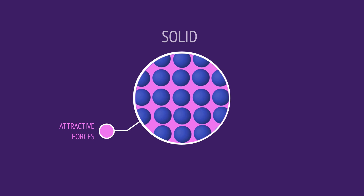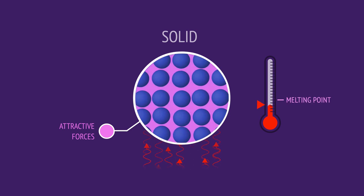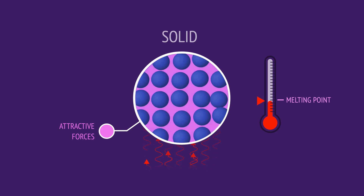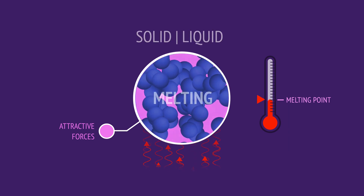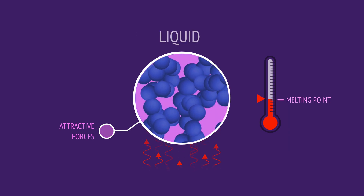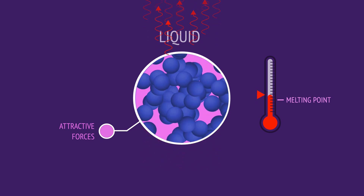So, in this video, we've seen that the temperature of a substance is a measure of the average kinetic energy of the particles, and that by absorbing heat, the particles can gain sufficient kinetic energy to overcome the attractive forces and so change their state.